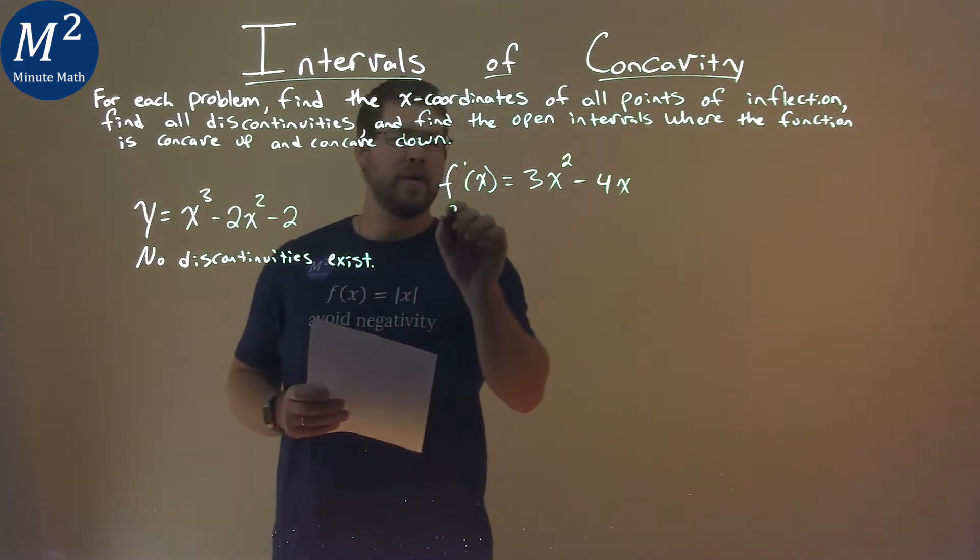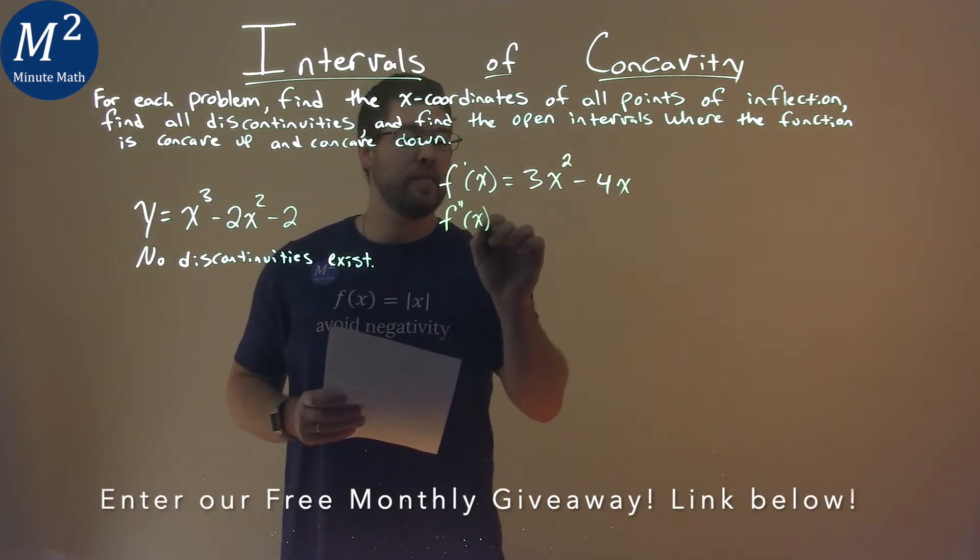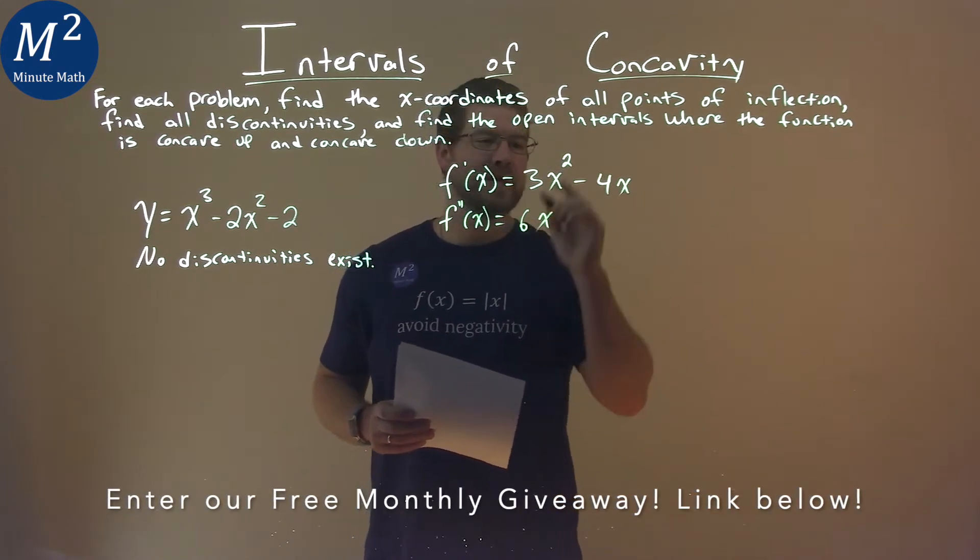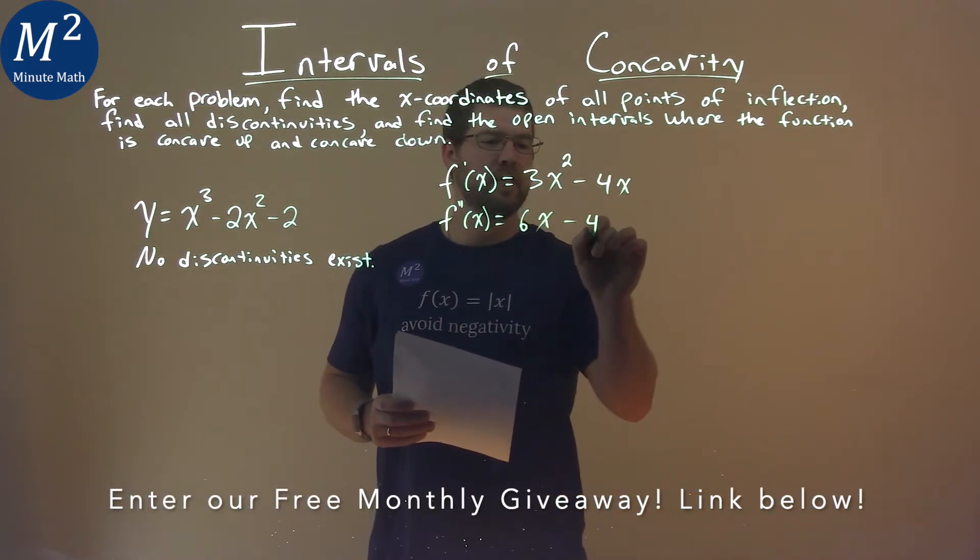From there, I need to find my second derivative, f''(x). Power rule: 3 times 2 is 6, x to the first power, minus just the 4. So f''(x) = 6x - 4.